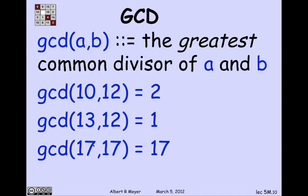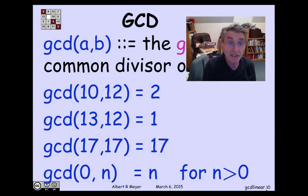The GCD of 17 and 17 is 17. That's a general phenomenon. The GCD of n and n is always n. The greatest common divisor of 0 and n is equal to n for any positive n. That's because everything is a divisor of 0. And it means the GCD of 0 and n is simply the greatest divisor of n, which is, of course, n by itself.